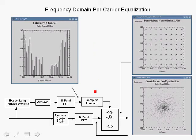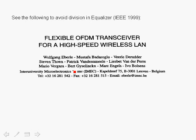If we look at the zero-forcing equalizer on a per carrier basis, we need to perform this complex inversion of the estimated channel on a per carrier basis, and this, of course, requires some hardware to do this.